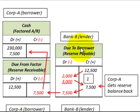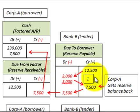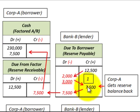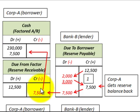The actual sales returns and discounts totaled $5,000 ($2,000 + $3,000), leaving $7,500 of the $12,500 reserve to be returned to Corporation A. Bank B debits their due-to-borrower payable by $7,500, and Corporation A credits their due from factor for $7,500. Assuming a cash payment, Corporation A debits cash for $7,500.